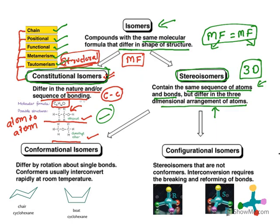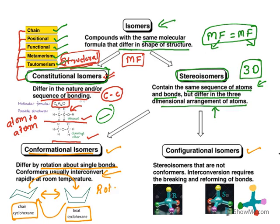In stereoisomers you have two types: conformational isomers and configurational isomers. Conformational isomers differ by rotation about a single bond and they usually interconvert rapidly. For example, cyclohexane can exist in chair form or boat form. When the bonds are moved, the chair form converts into boat form or vice versa. They are called conformational isomers, also known as rotamers, because a simple rotation of a single bond results in another isomer.